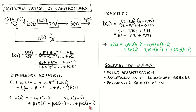To implement the controller, the following operations need to be performed at each sampling instant. The output should be sampled, typically by an analog to digital converter. The reference input should be generated and the sampled output subtracted to form the error signal. The difference equation is then calculated, which produces the controller output. This output is then passed through a zero order hold circuit, typically implemented as a digital to analog converter, which provides the plant input throughout the current sampling period.